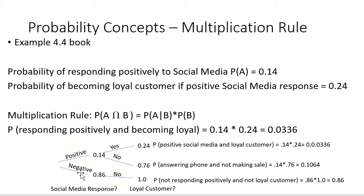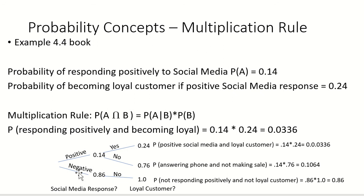If the response was negative, they're not going to become a loyal customer. So 86% fall into the category of not responding positively, which also means they're not going to become a loyal customer. Putting it all together: 0.14 times 0.24 gives a 3.36% chance of getting a loyal customer from your social media. There's a 10.64% chance of a positive interaction that still didn't convert to a loyal customer. If you can just draw this out to make sense of it, it's going to help you a ton in answering questions.